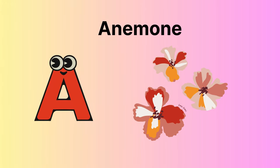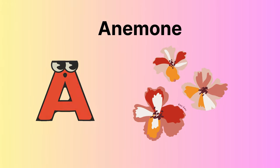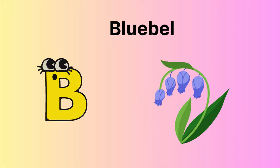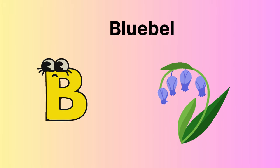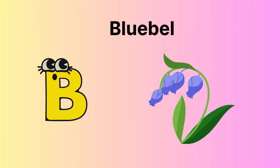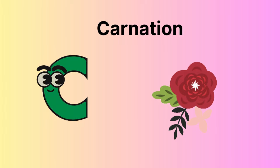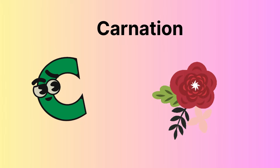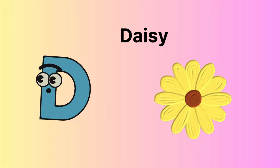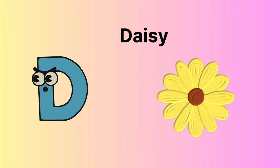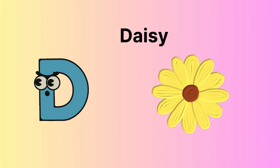A for anemone. B for bluebell. C for carnation. D for daisy.